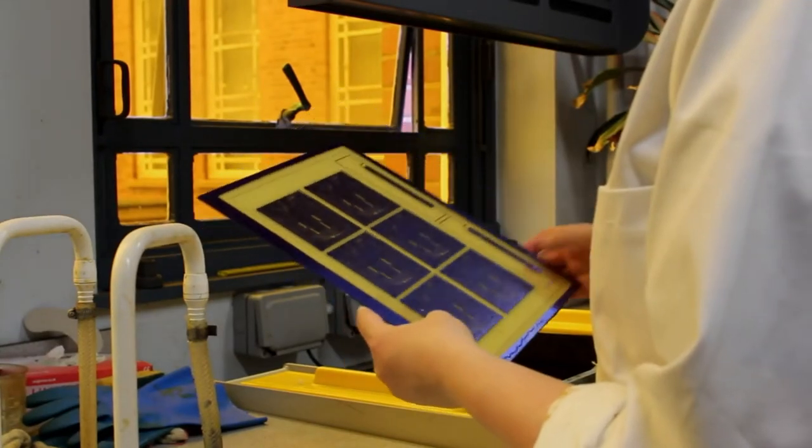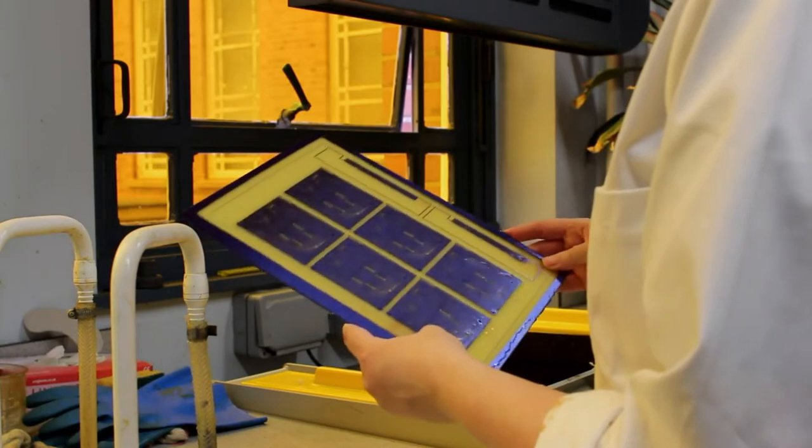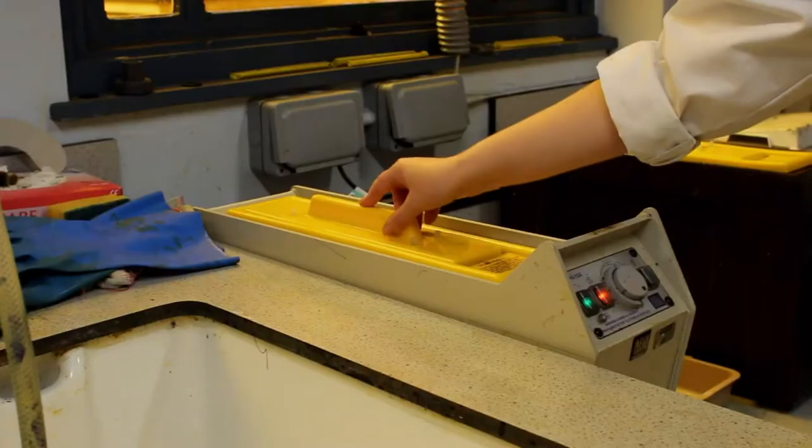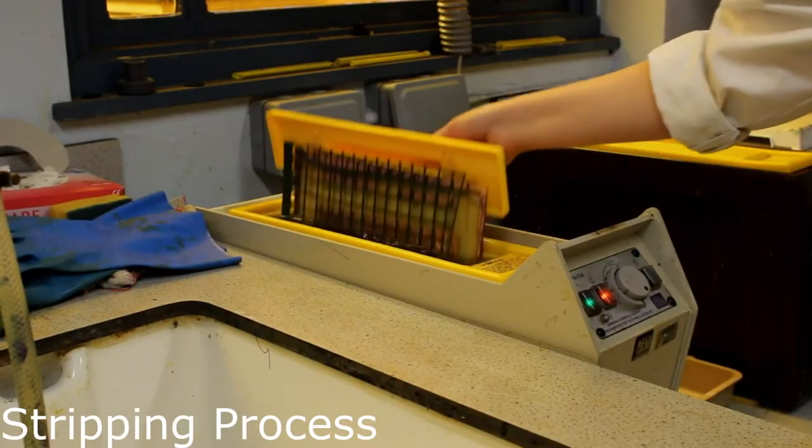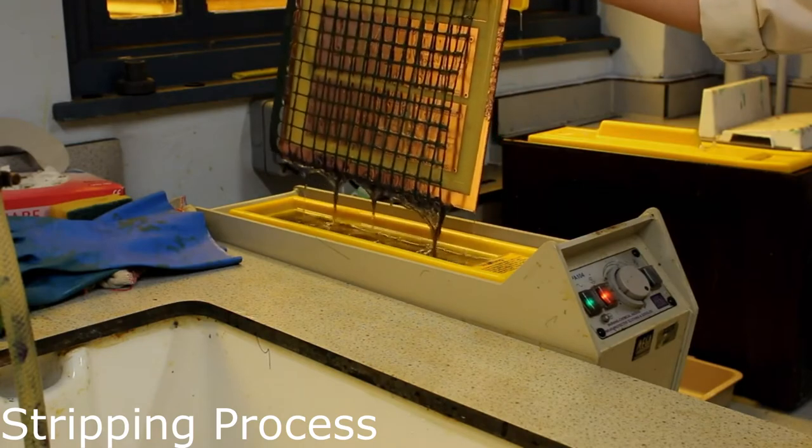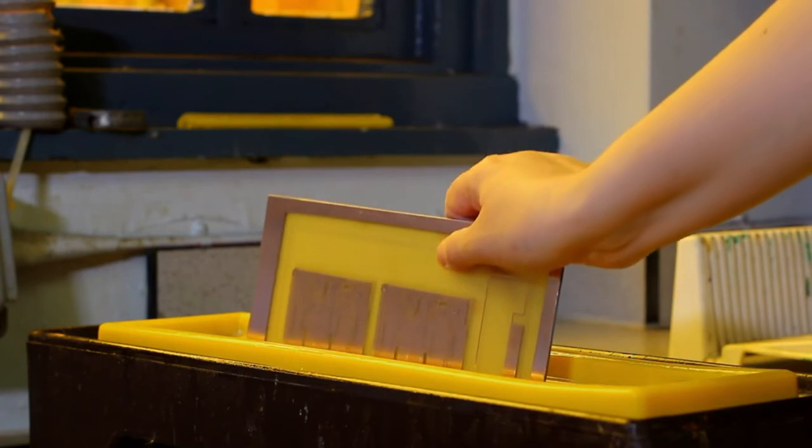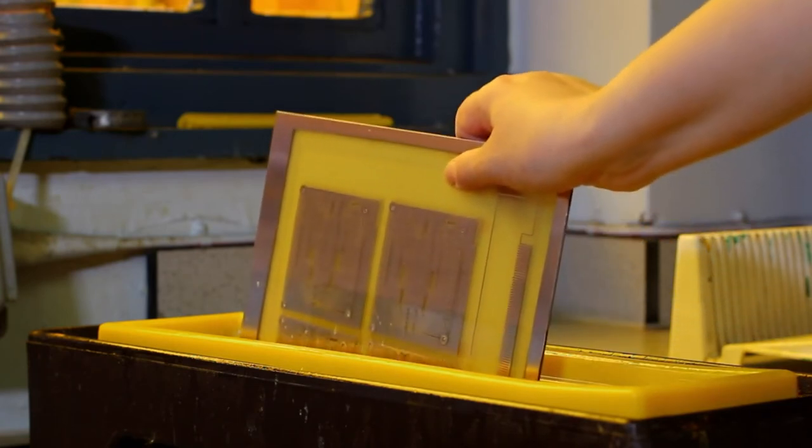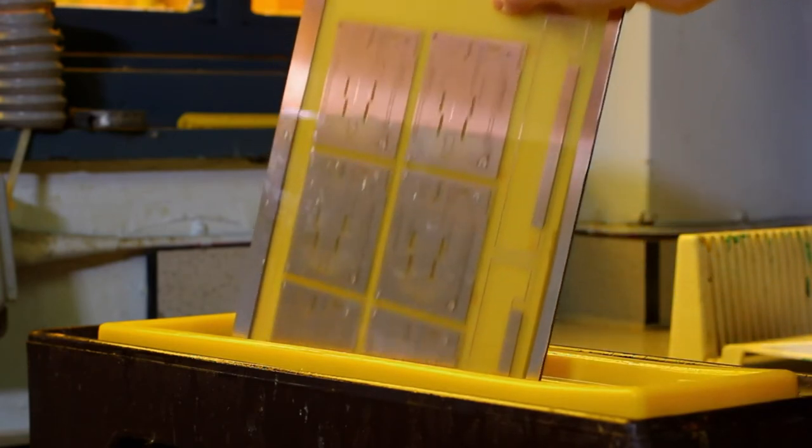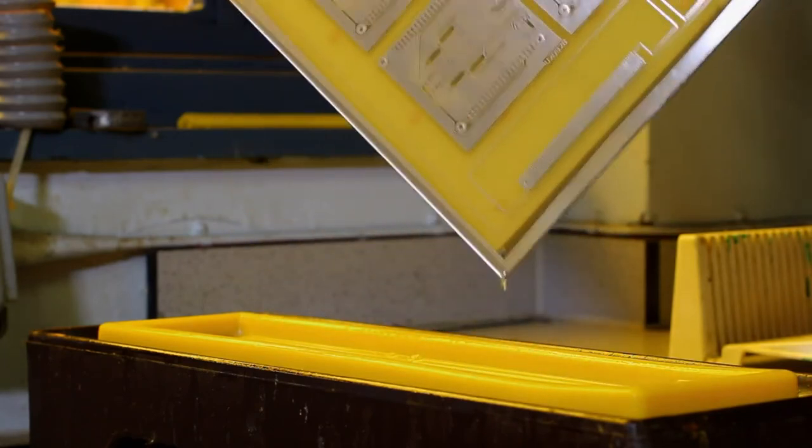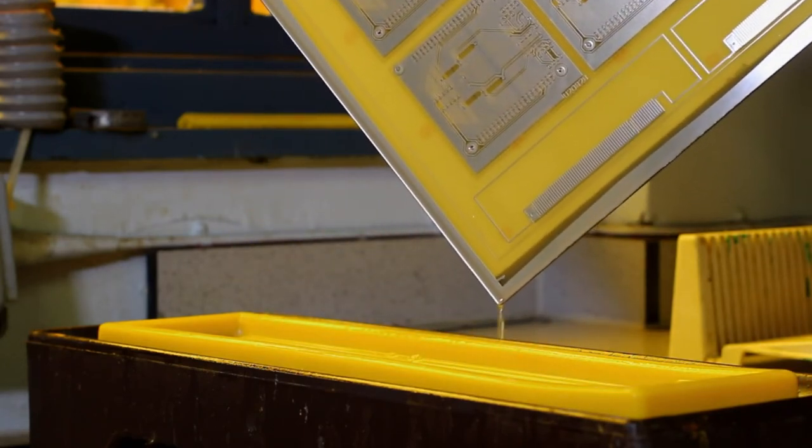The etched board is washed and visually inspected before being put in a bath of resist stripper to remove the hardened film. The board is then dipped in a tinning bath which coats the copper with tin preventing oxidization and making it easier to solder. The board is removed from the tinning bath and rinsed before being dried.